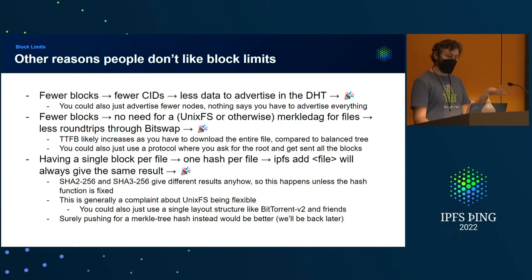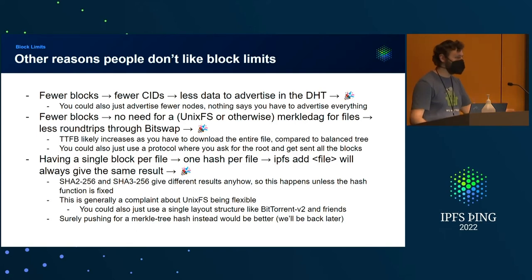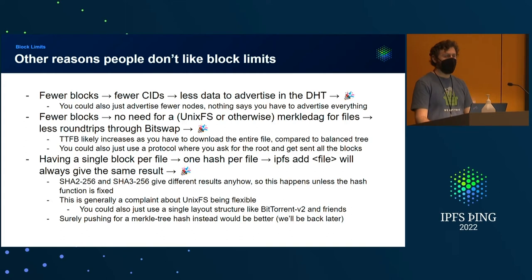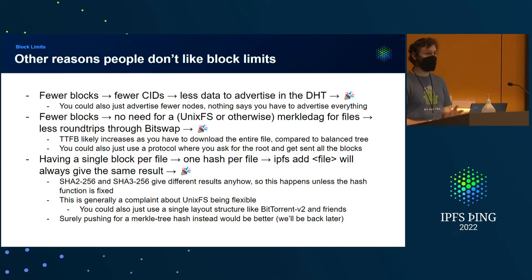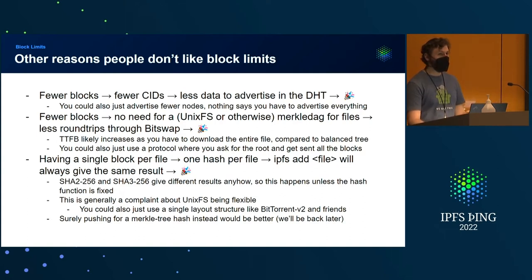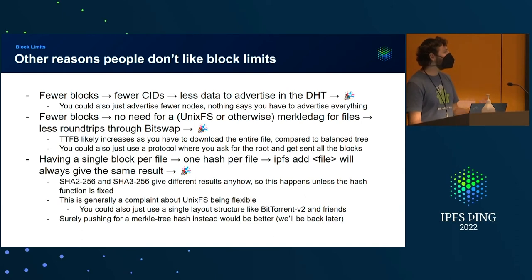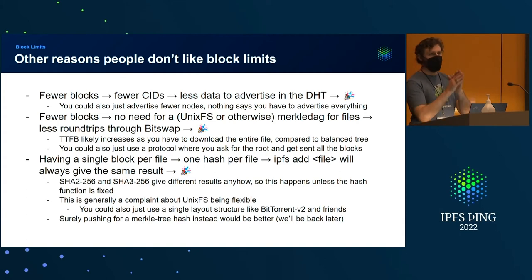Also, your time to first byte probably goes up because you have to download the entire thing and verify it before you look at any of the bytes. And people say: if we could have a single block, then IPFS CID would always give the same answer. But that's not true, because you could do SHA-2 or SHA-3 or Blake-2 or Blake-3. There are multiple IPFS implementations that use different hash functions in addition to different chunking. This complaint is really about Unix-FS being flexible, as opposed to something like BitTorrent with a more fixed structure.